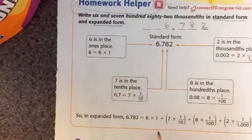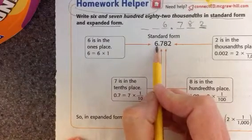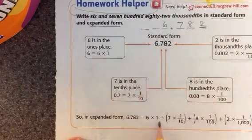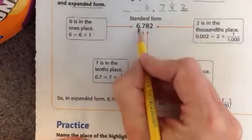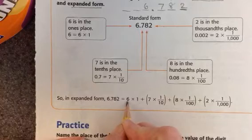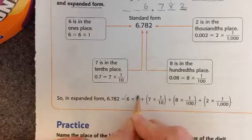Now to write it in expanded form, I'm going to take each number individually and write it in our equation here, in our expression. So here I have six, so I write down the digit six and it is in the ones place. So six times one, plus my seven is in the tenths place,